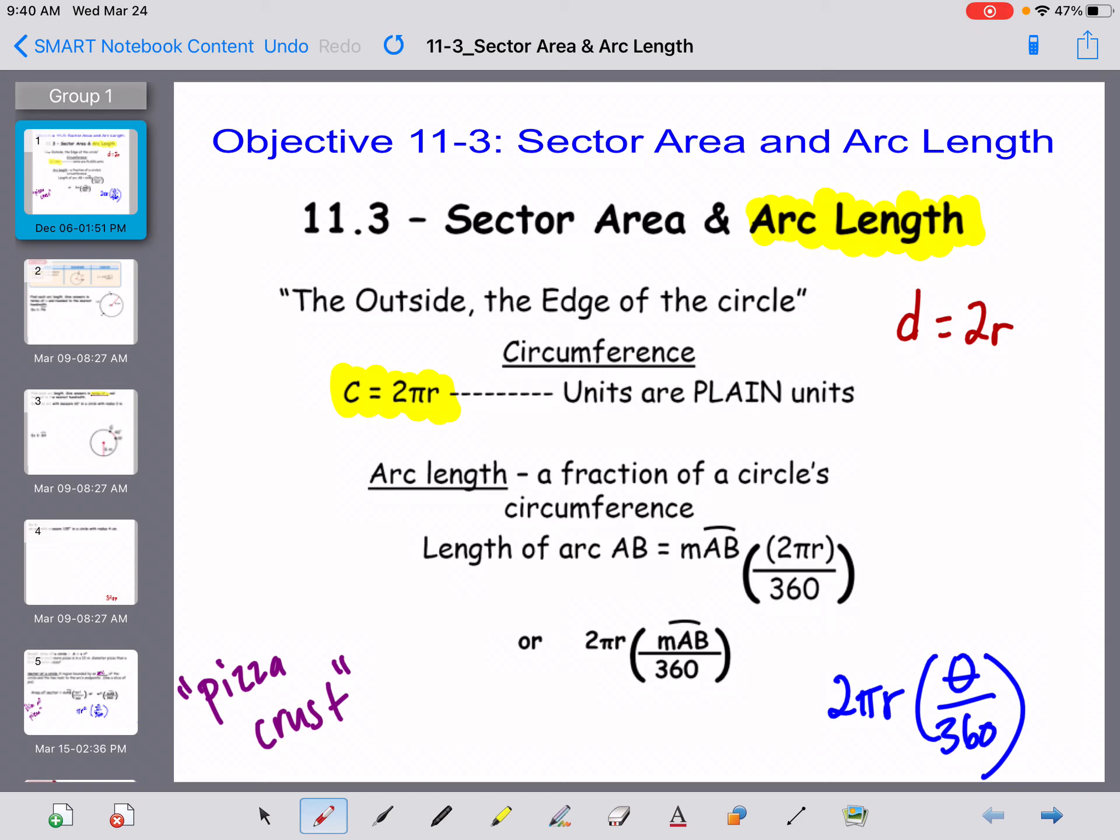That just means you're not going to see some sort of measurement with it. An arc length is really just a fraction of the circle's circumference. So a lot of the times when we talk about circles, we think about pizza. The arc length is actually just a pizza crust. It's just that little part on the outside of the circle.